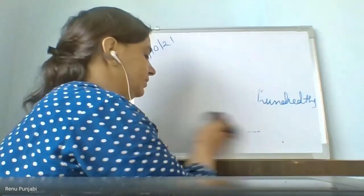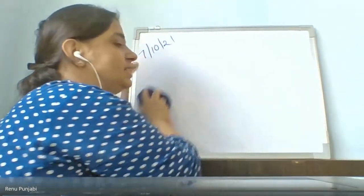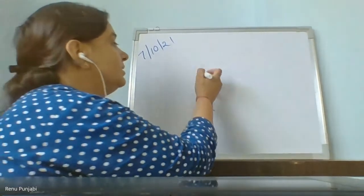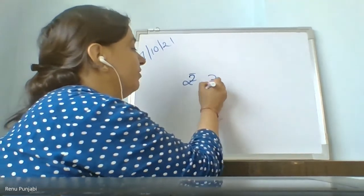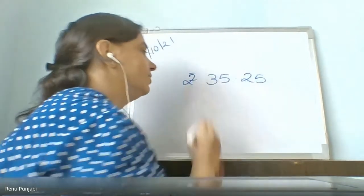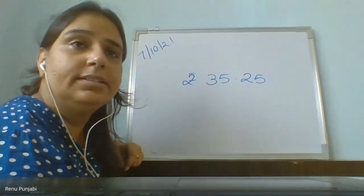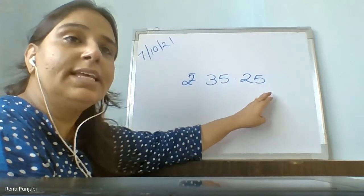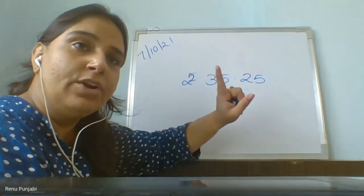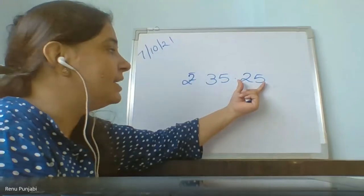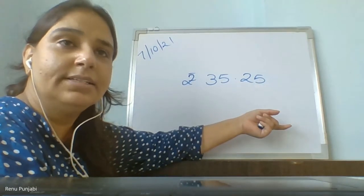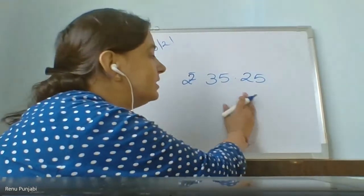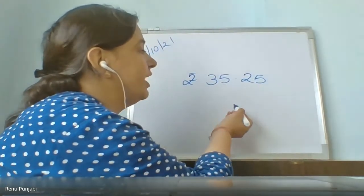Suppose you get this amount: 35.25 rupees. What does this mean? It means 35 rupees and 25 paisa. And 25 paisa has a relation of 100 because 1 rupee equals 100 paisa. So 25 paisa is a part of how many paisa? If I tell you to write this into a fraction — how will you write 25 paisa? 25 upon 100.